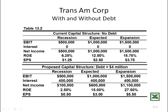How did this work out? In the first panel of this table, we're assuming no debt. In the expected case, the firm earns $1 million in EBIT. There's no interest and no taxes, so net income is $1 million. Return on equity is $1 million divided by $8 million, which is 12.5%. Earnings per share is $1 million divided by 400,000 shares, which is $2.50.